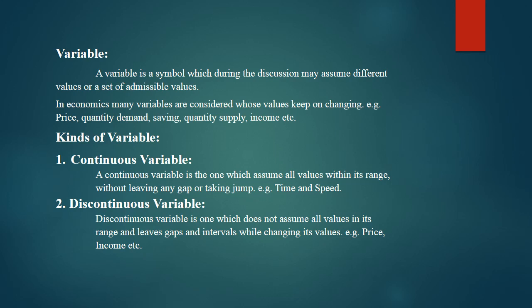It is not the case that your value jumps from 2 to 6, or from 100 to 200. Rather, within the given range of possible values, every intermediate value is touched — then it will be a continuous variable. For example, if you look at a wall clock, the needle touches every point as it moves, so time is a continuous variable. Similarly, speed changes continuously as the needle passes through every point.